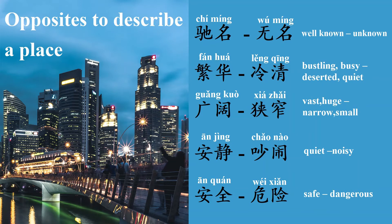广阔, vast, huge. The opposite of 广阔 is 狭窄, narrow, small. 安静, quiet. The opposite of 安静 is 吵闹, noisy. 安全, safe. The opposite of 安全 is 危险, dangerous.